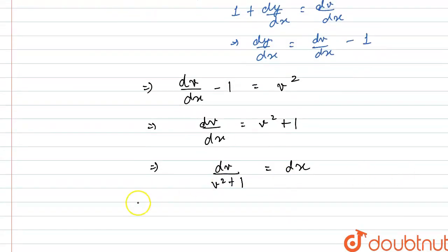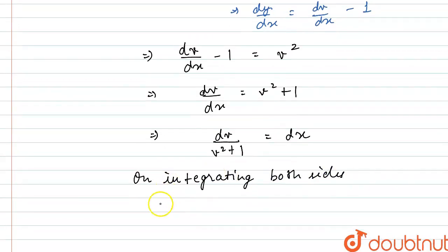Now, for solving this we will simply integrate both sides. On integrating both sides we get integral of dv divided by v squared plus 1 equals integral of dx.